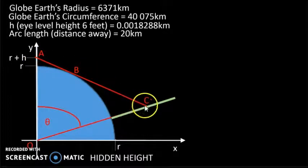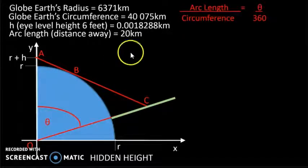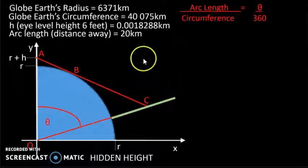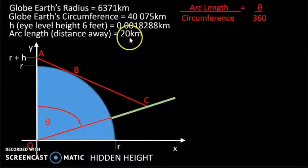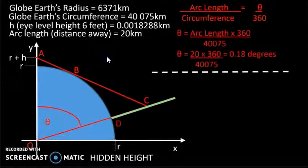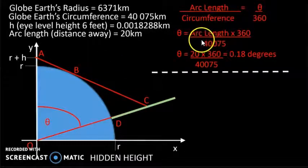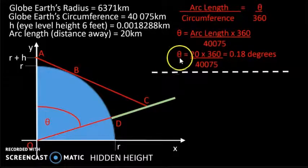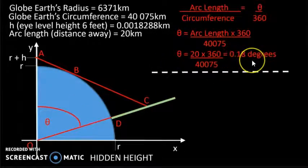We would form a triangle which would generate an angle theta here. Remember that we can use this expression to calculate theta. We already know the arc length. So rearranging this formula and plugging in the values for arc length and circumference, we get theta is equal to 0.18 degrees.